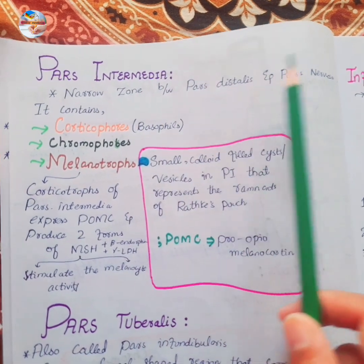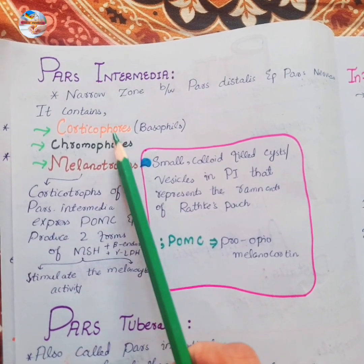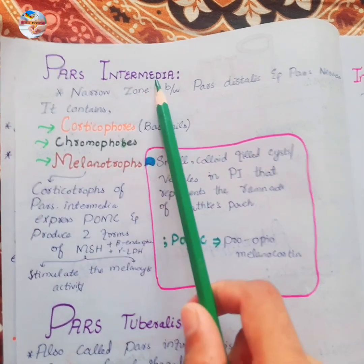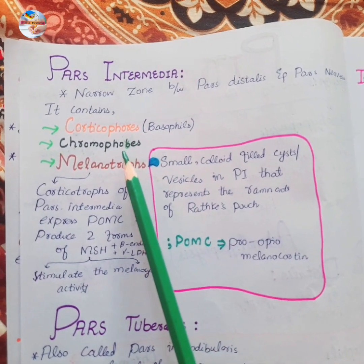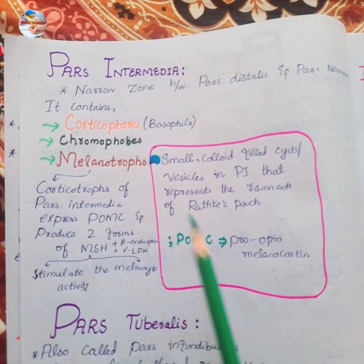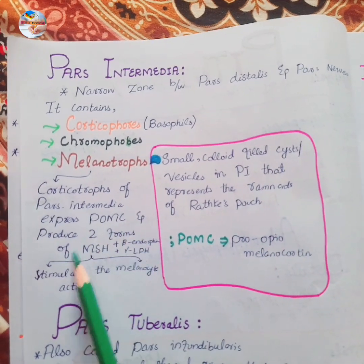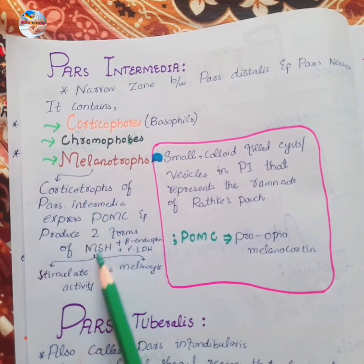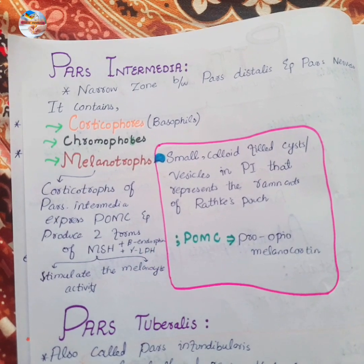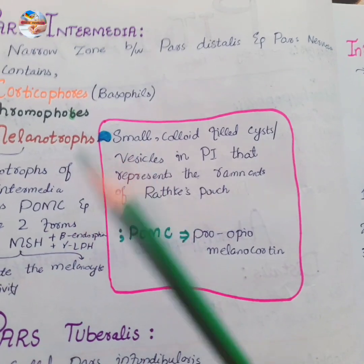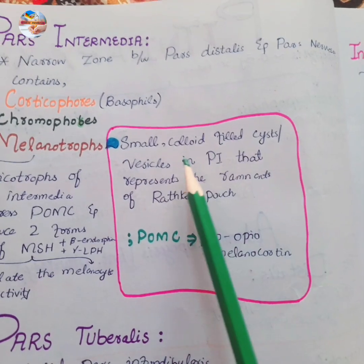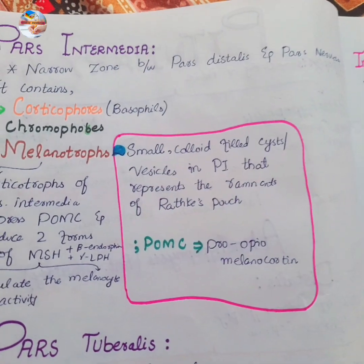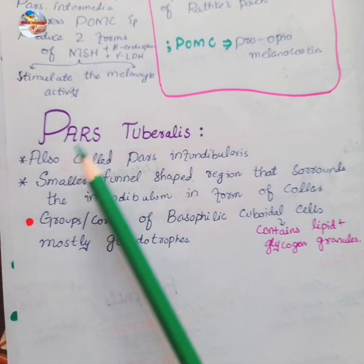The pars intermedia is a narrow zone between the pars distalis and the pars nervosa. It contains two types of cells: corticotrophs and chromophobes. The corticotrophs in the pars intermedia express POMC (pro-opiomelanocortin) and produce two forms of MSH (melanin stimulating hormone), which stimulates melanocyte activity, as well as beta-endorphins and gamma-LPH. A specialized feature of the pars intermedia is the presence of small colloid-filled cysts representing remnants of Rathke's pouch.